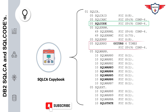The next variable, similar to SQLCODE, is SQLSTATE, defined as PIC X(5). You can use either variable to check whether your SQL statement executed successfully or failed. However, it is recommended to use SQLCODE because it is more precise. If you are dealing with a database other than DB2, then you can go with SQLSTATE.